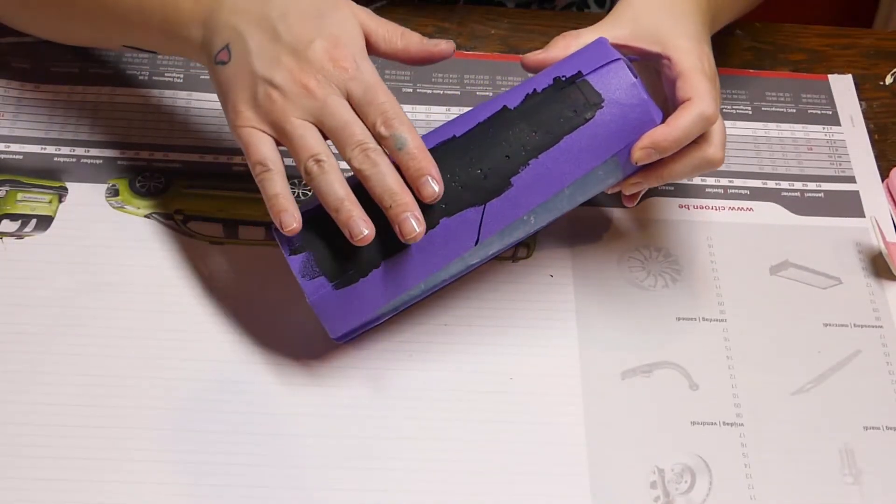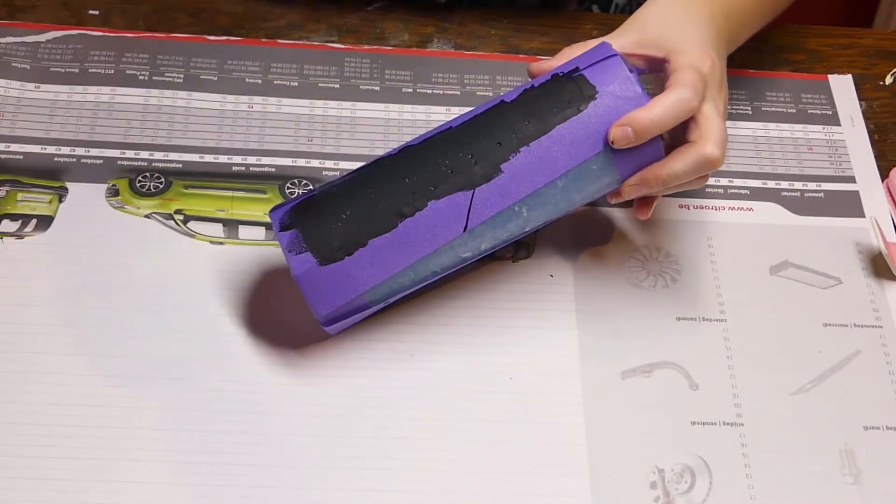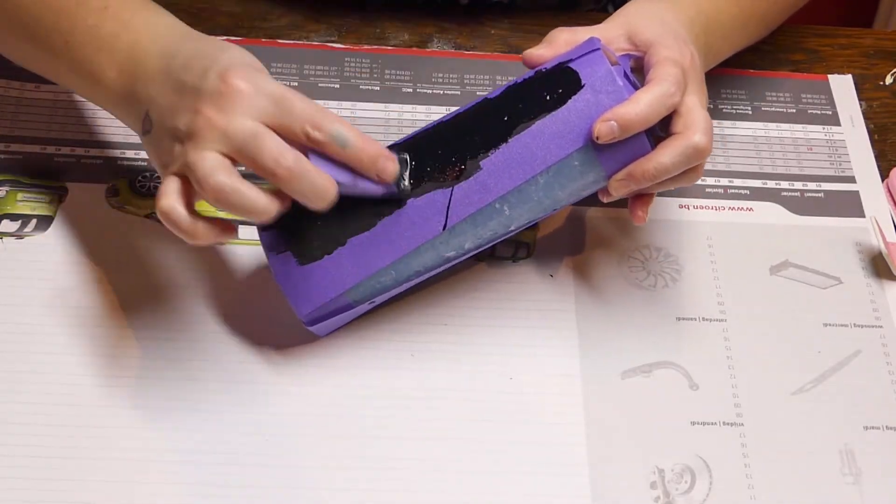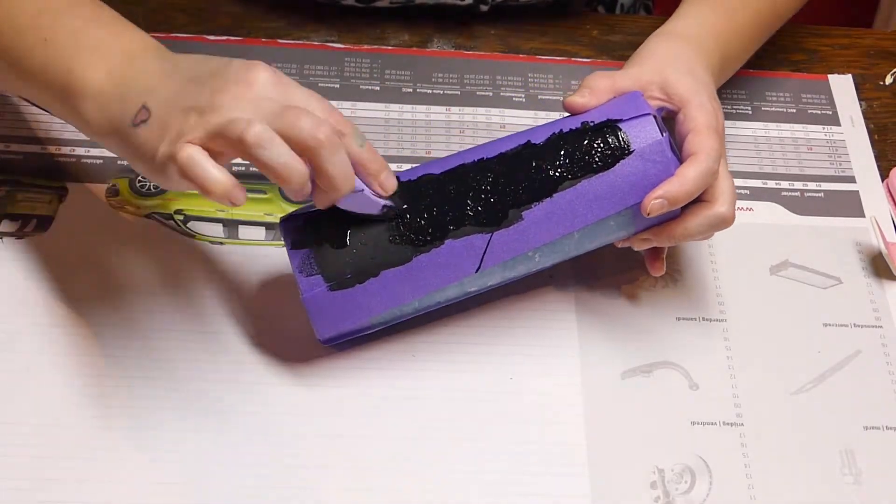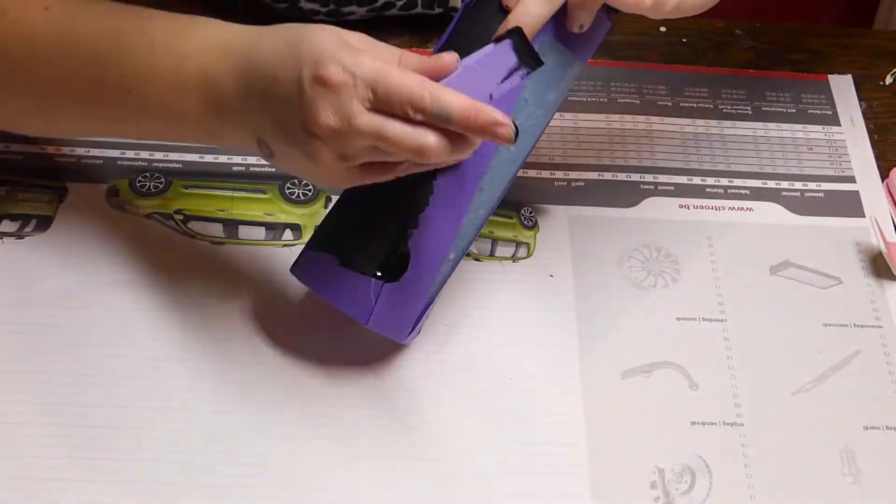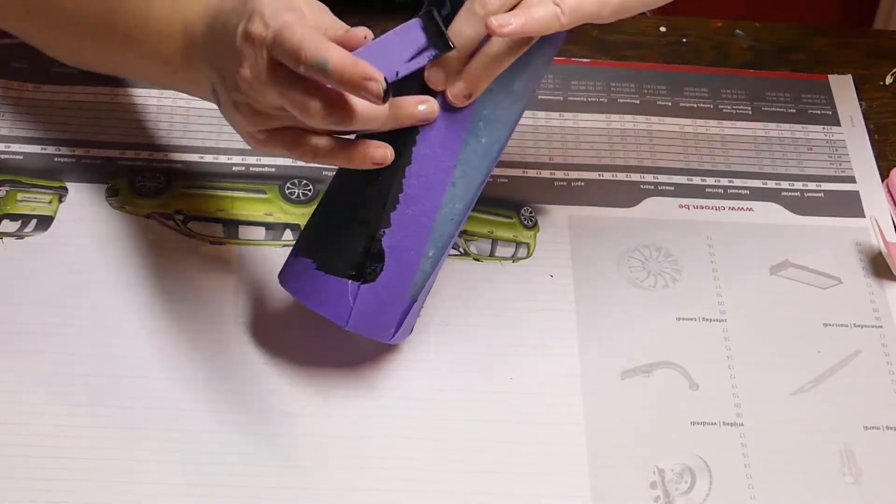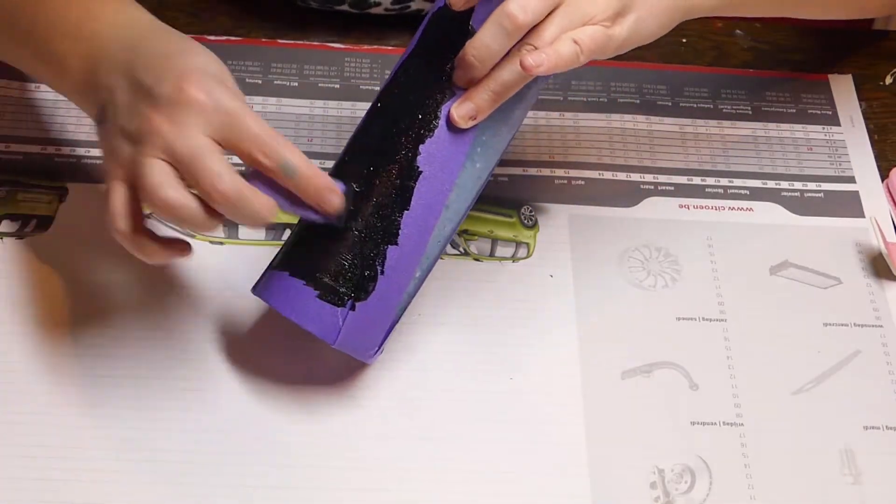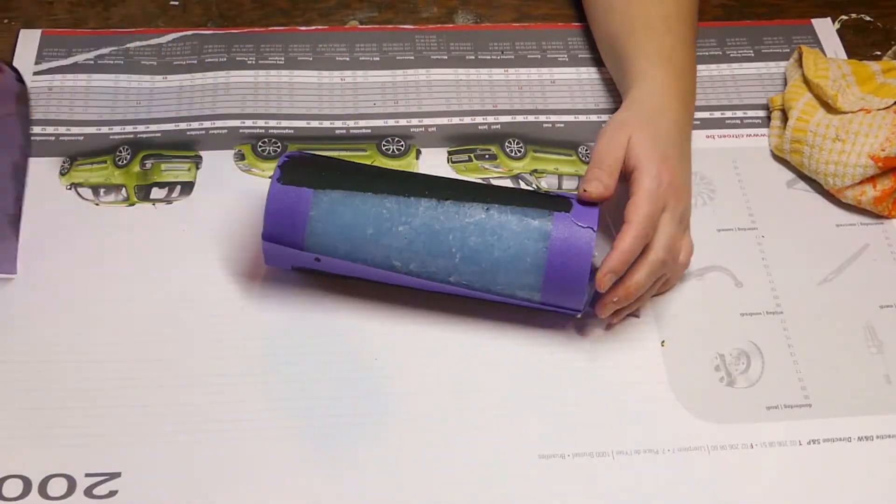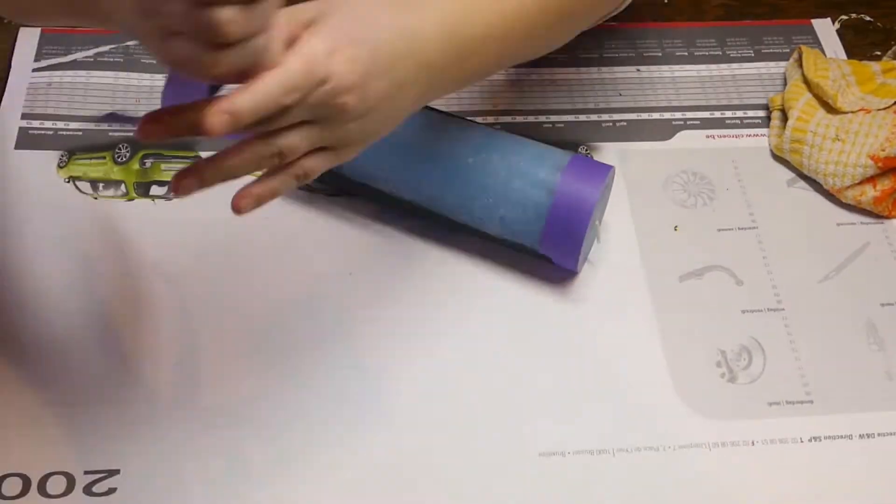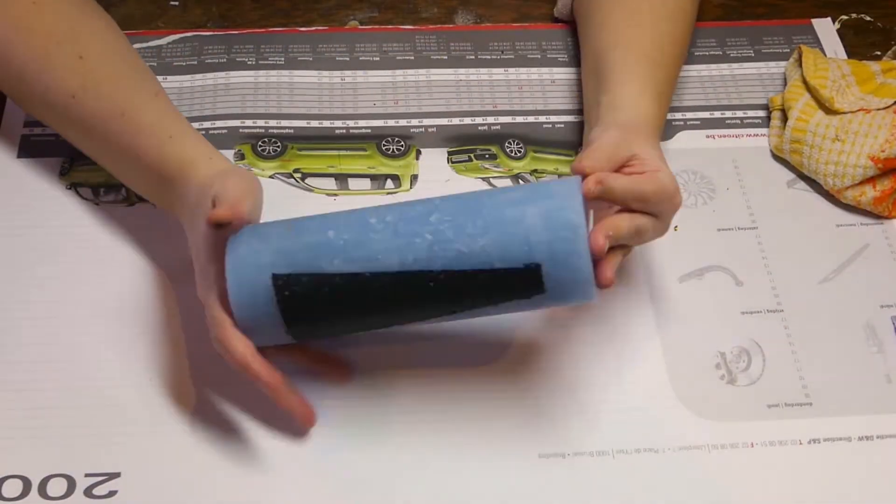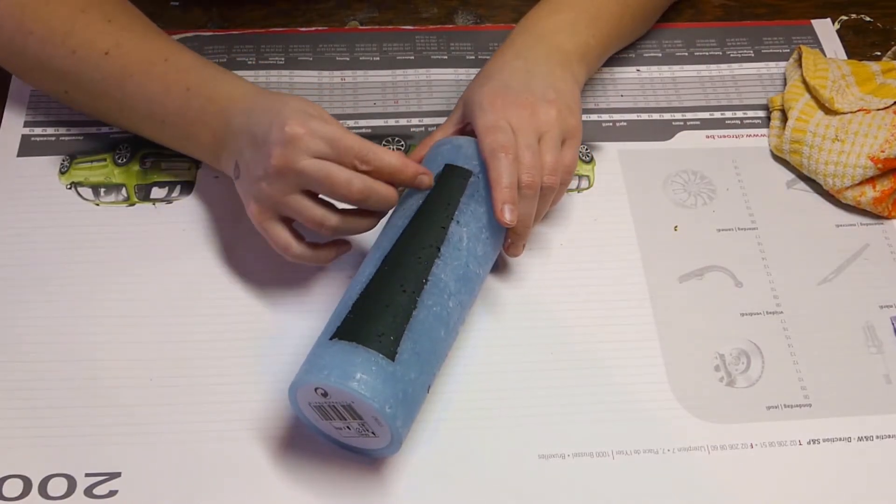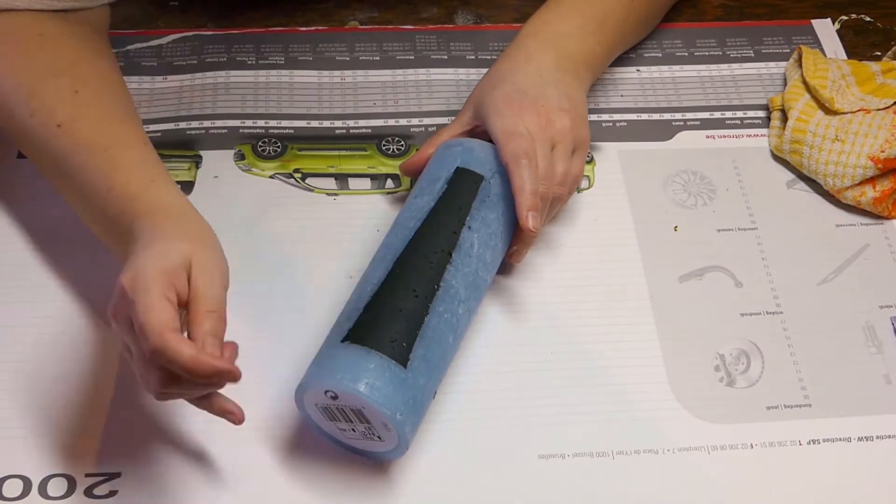Let the paint dry and add another layer. Once that's dry, remove the painter's tape. If some of the edges aren't perfectly clean, carefully scratch them with your nail to clean them up.